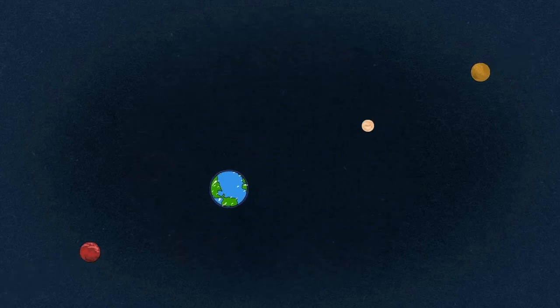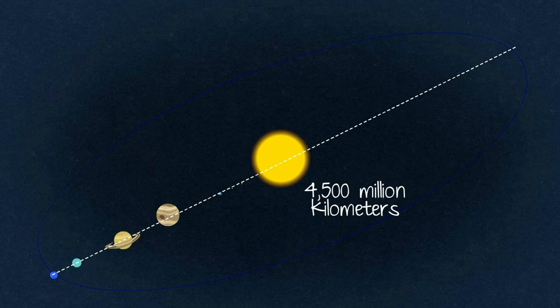Earth is part of the solar system, and it measures 4,500 million kilometers.